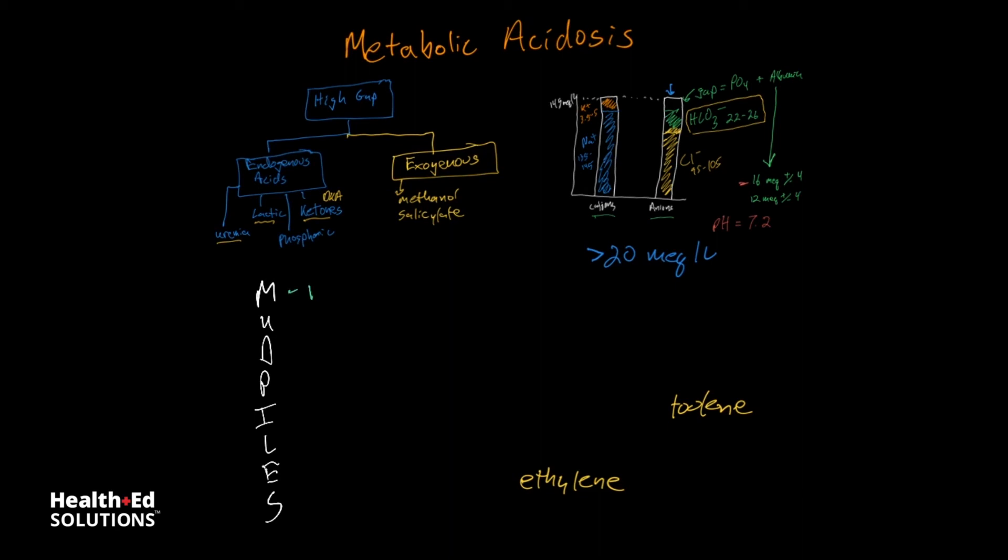So mud piles M stands for methanol, it's an exogenous acid. U stands for uremia, an endogenous acid. D stands for DKA. And when you're thinking about DKA, you can just think about the other causes of ketosis, starvation, alcoholics, etc. The P stands for paracetamol, which is the European term for Tylenol, and also can be paraldehyde.